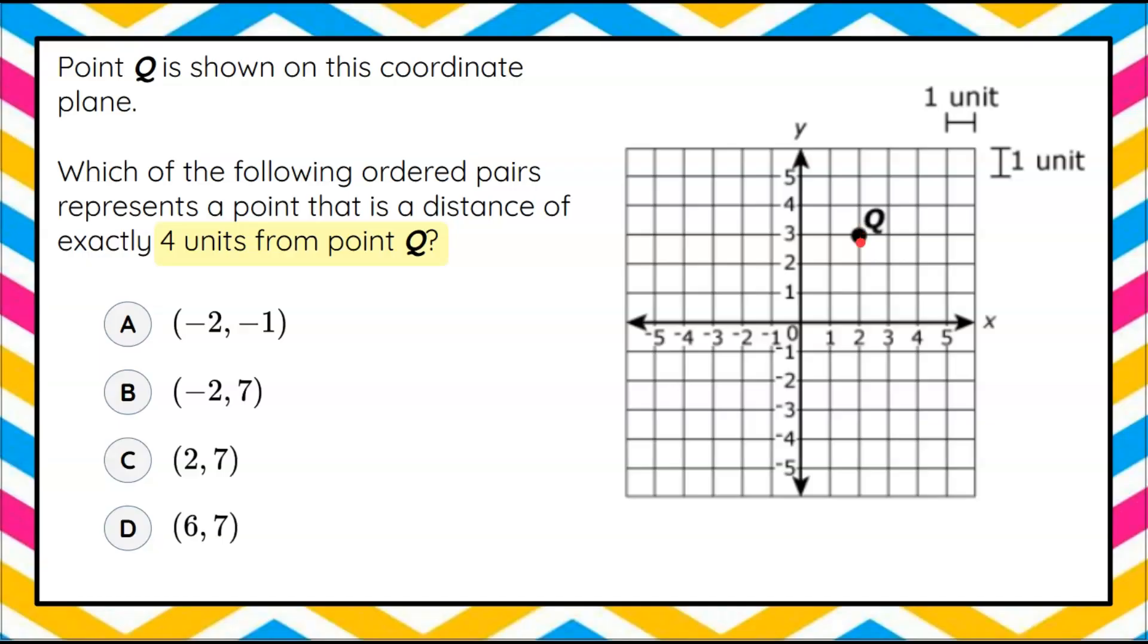So let's first start by going to the right, one, two, three, four, and that would bring us to ordered pair six and up three. Over six, right six, up three, six, three. Well, ordered pair six, three is not one of our choices, so it's not that direction from point Q.